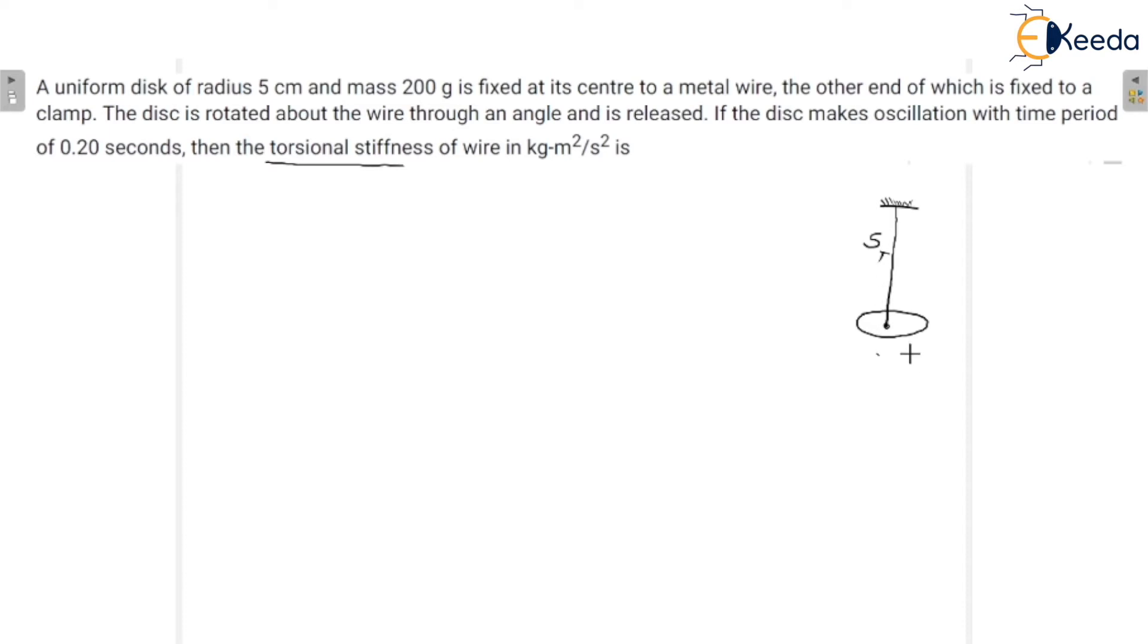What is given? The stiffness of the wire is given and we are going to rotate the disc to an angle. Let us assume that we rotate the disc by a small angular displacement theta.